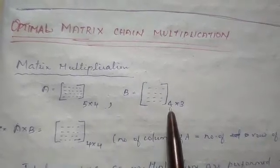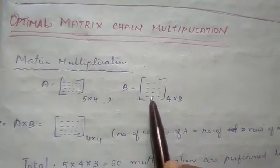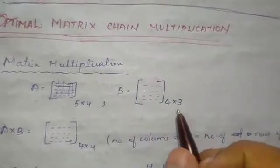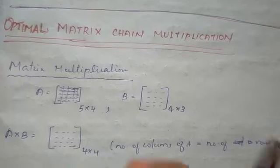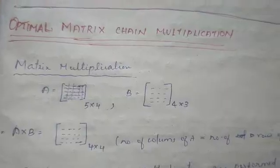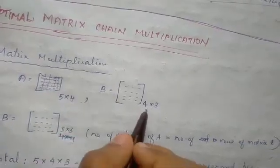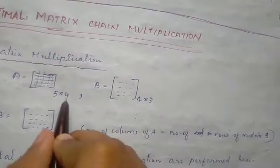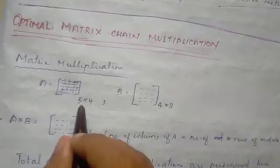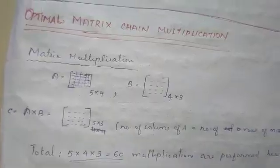Now we are going to multiply two matrices. A is 5 by 4 and B is 4 by 3. So we have a result matrix of size 5 by 3. The matrix multiplication is performed when the column size of the first matrix matches the row size of the second matrix. The total cost of multiplying these two matrices is 5 into 4 into 3, that is 60.